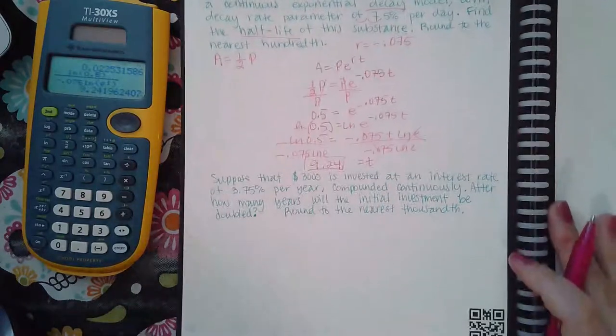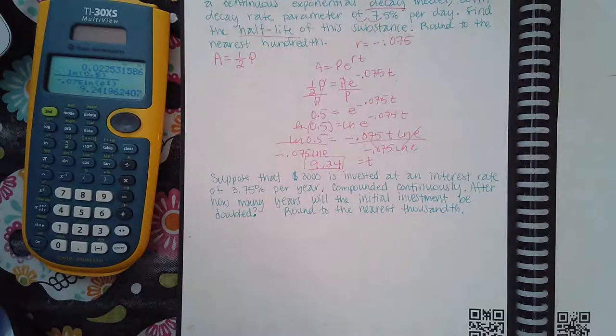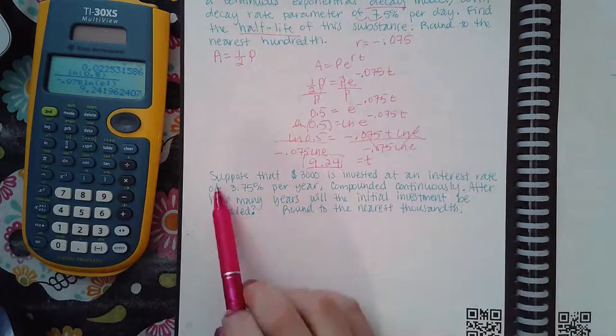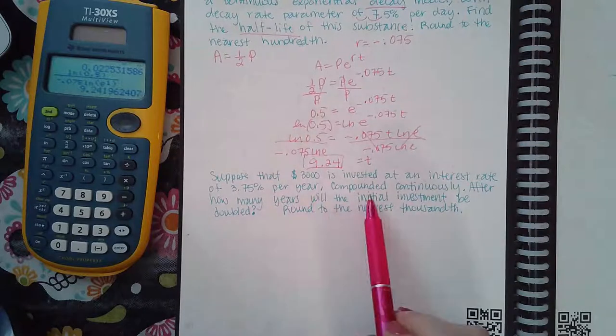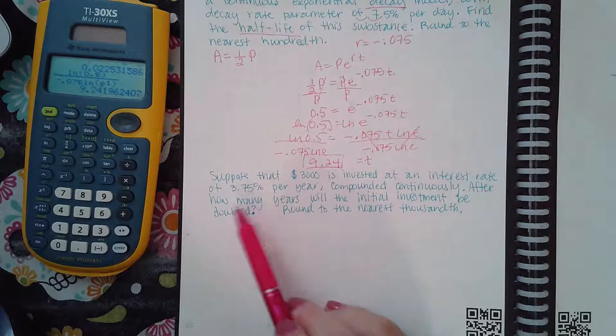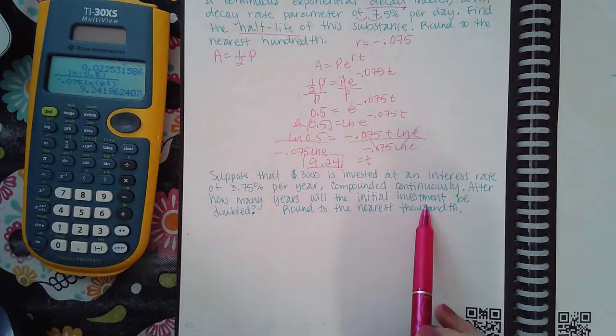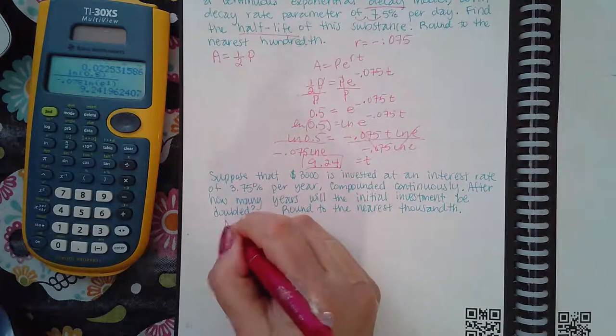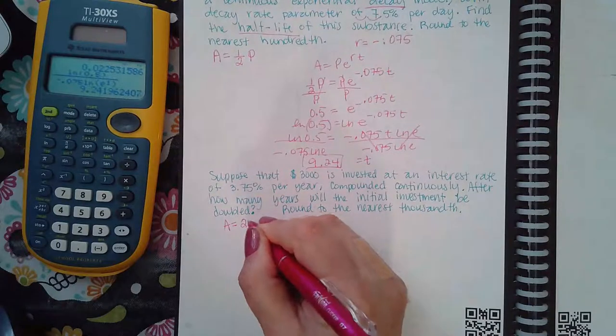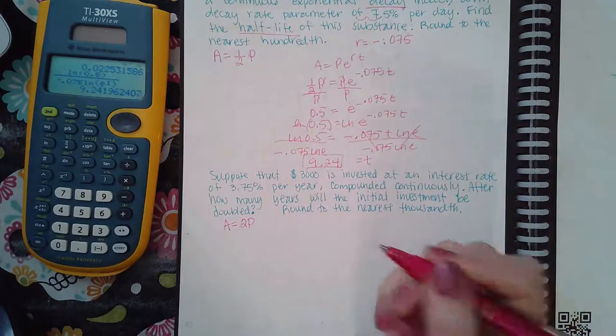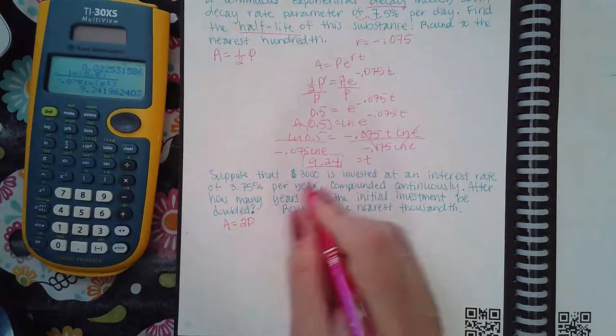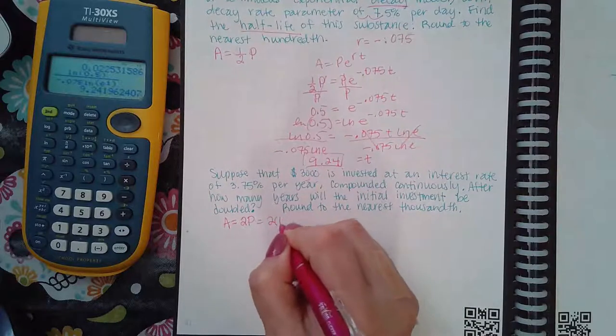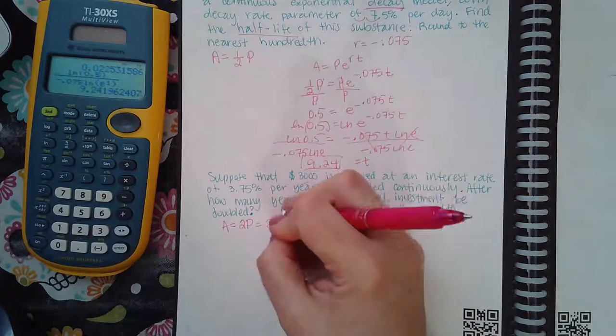Now the last example says suppose that $3000 is invested at an annual interest rate of 3.75 percent. The investment will be doubled, so that means the amount afterward would be twice the amount that you put in. But I do know what the P value is because it says that I invested this amount at the beginning. So that's actually going to be two times 3000, which is equivalent to 6000.